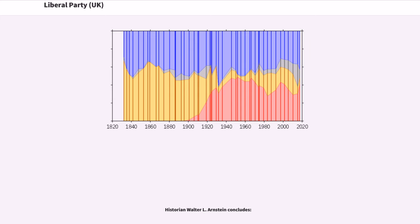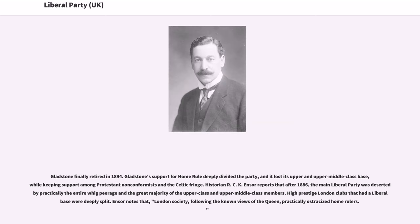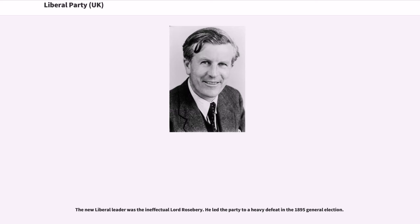Gladstone finally retired in 1894. His support for home rule had deeply divided the party, and it lost its upper and upper-middle-class base while keeping support among Protestant non-conformists in the Celtic fringe. Historian R. C. K. Ensor reports that after 1886 the main Liberal Party was deserted by practically the entire Whig peerage and the great majority of upper-class and upper-middle-class members. London society, following the known views of the Queen, practically ostracised home rulers. The new Liberal leader was the ineffectual Lord Rosebery, who led the party to a heavy defeat in the 1895 general election.